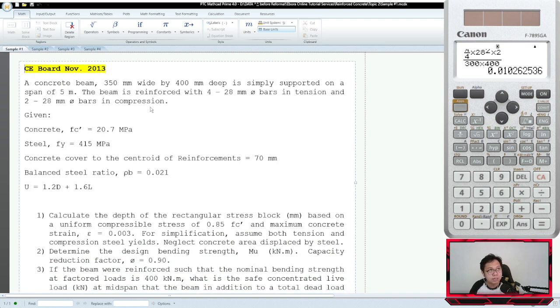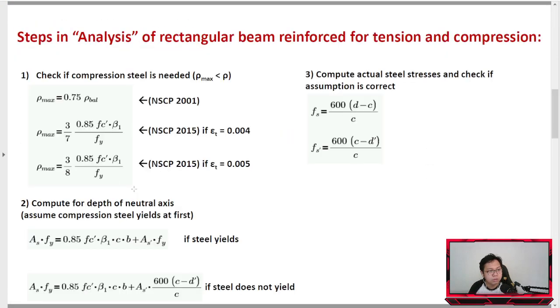Let's try to solve. Is this analysis or design? I think it's fairly obvious - this is analysis. We are given the dimension and the rebar. So let's check. The first thing to do is to check the raw maximum. Raw max is 0.75 times raw balance. Again, this is not the true raw max, but that's what we use because raw balance is given.